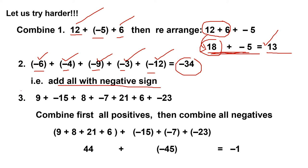This is number 3, which is harder because the signs are different. Positive 9, negative 15, positive 8, negative 7, 21, 6, and negative 23. We are going to add them up. First, combine all those with positive signs. Since this has no sign in front, it means it's positive. So positive 8, positive 21, positive 6, we combine all the positives together. Now, combine all the negatives, so negative 15, negative 7, and negative 23.